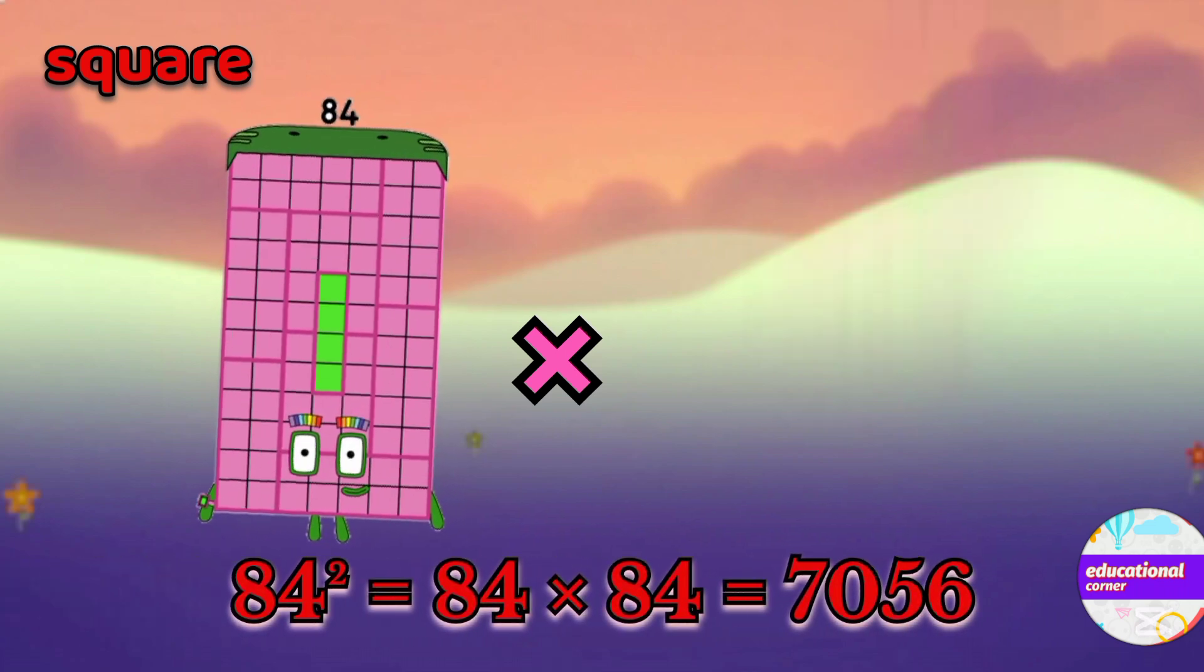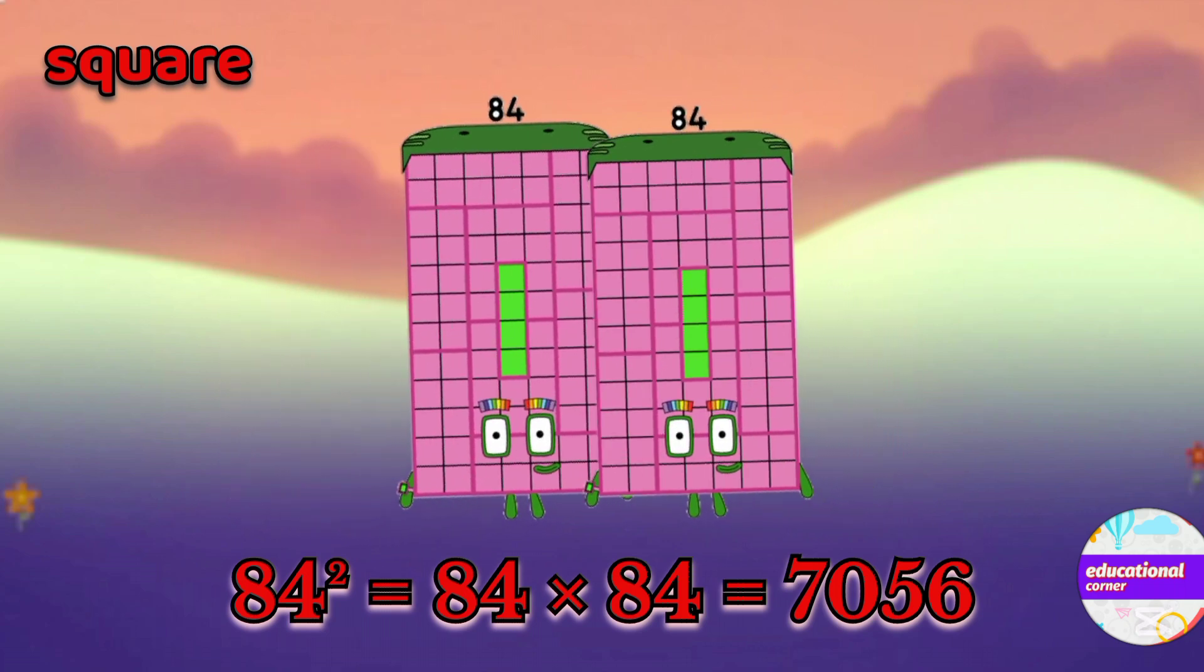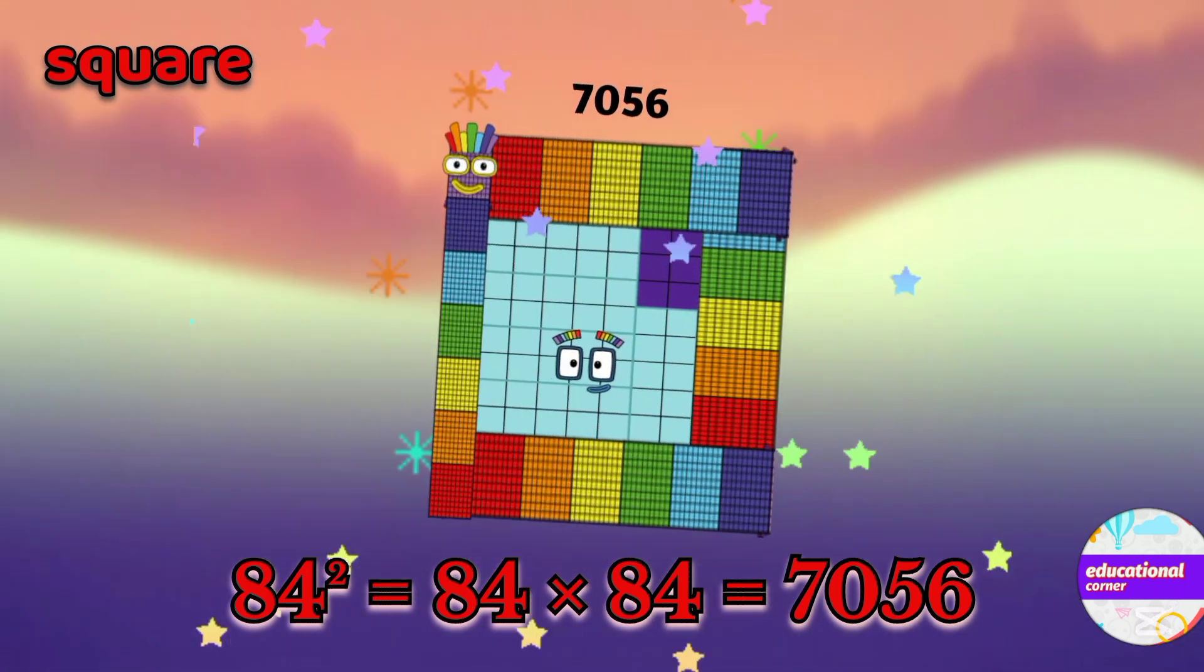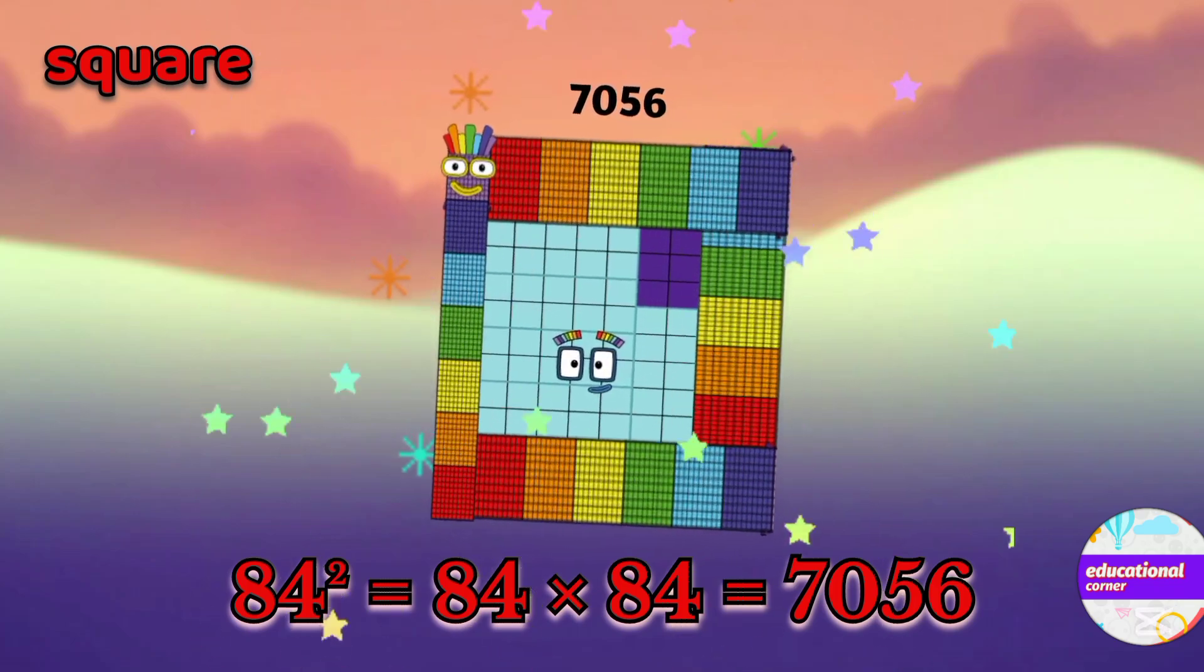84 multiply by 84. The square of 84 is 7056.